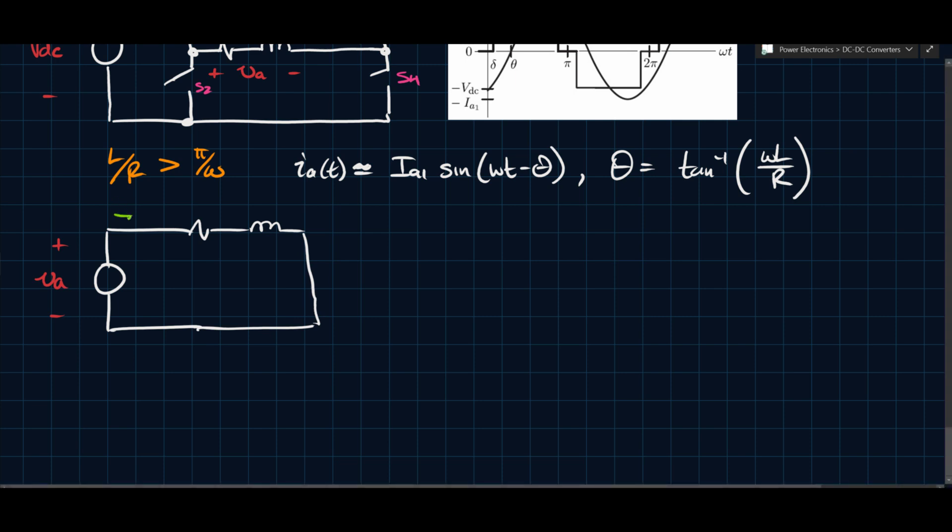If this is the case, then we have that here, we have IA, and obviously we have R, and what I'm going to do is I'm going to write this as j omega L.